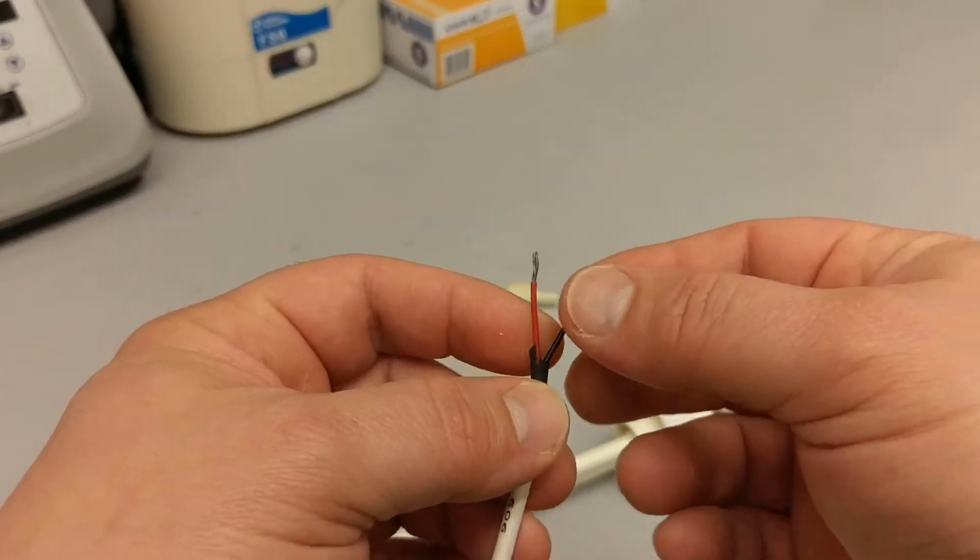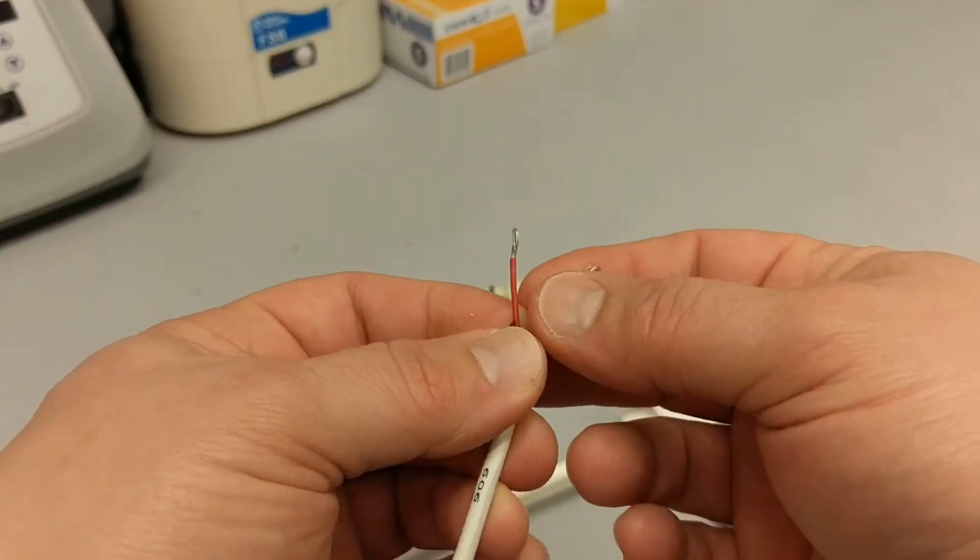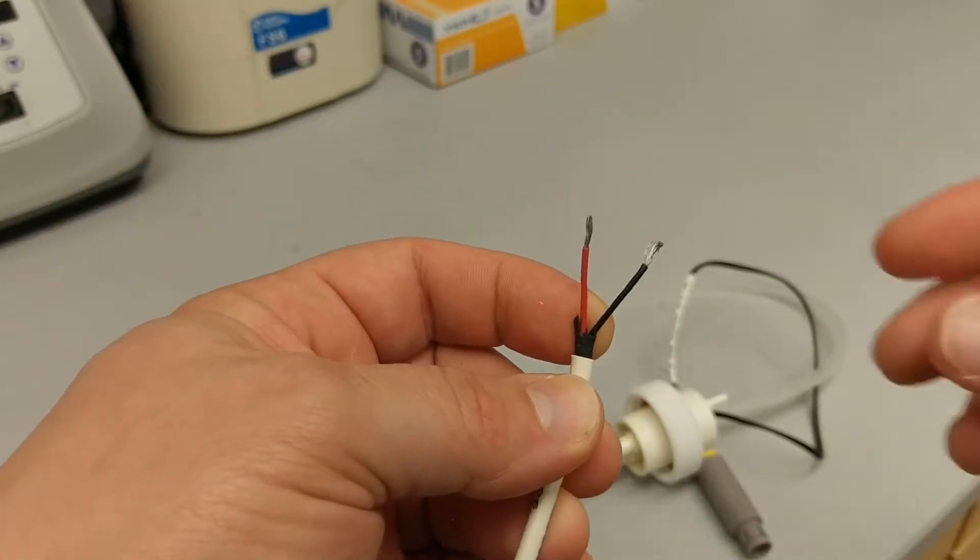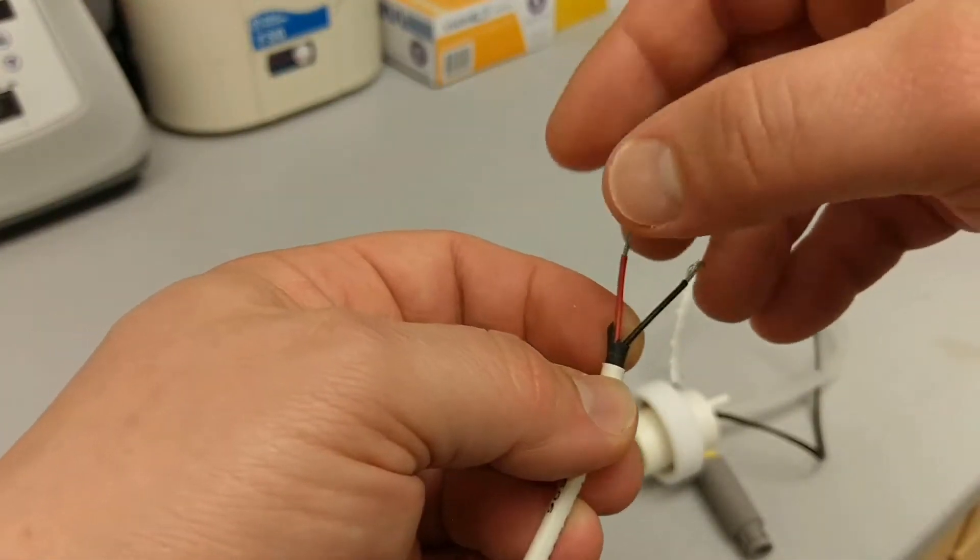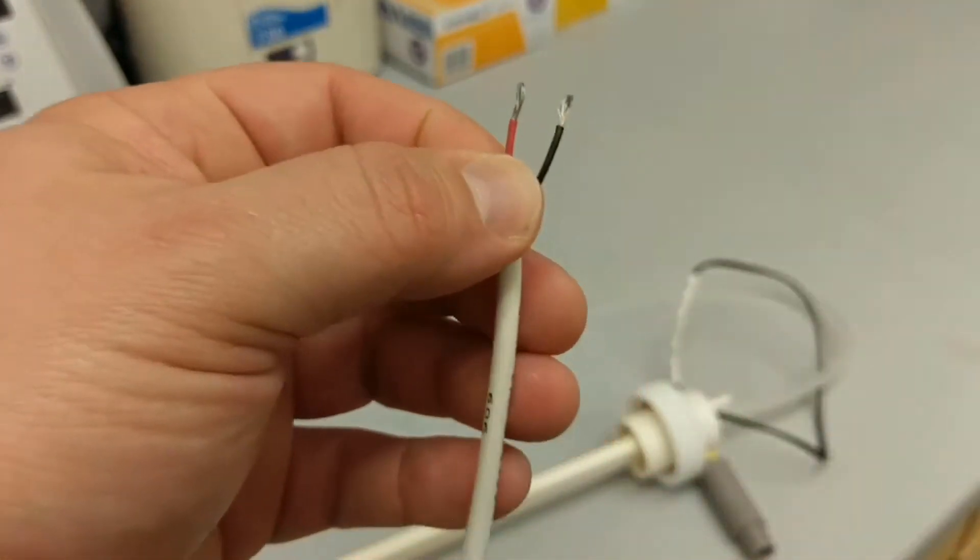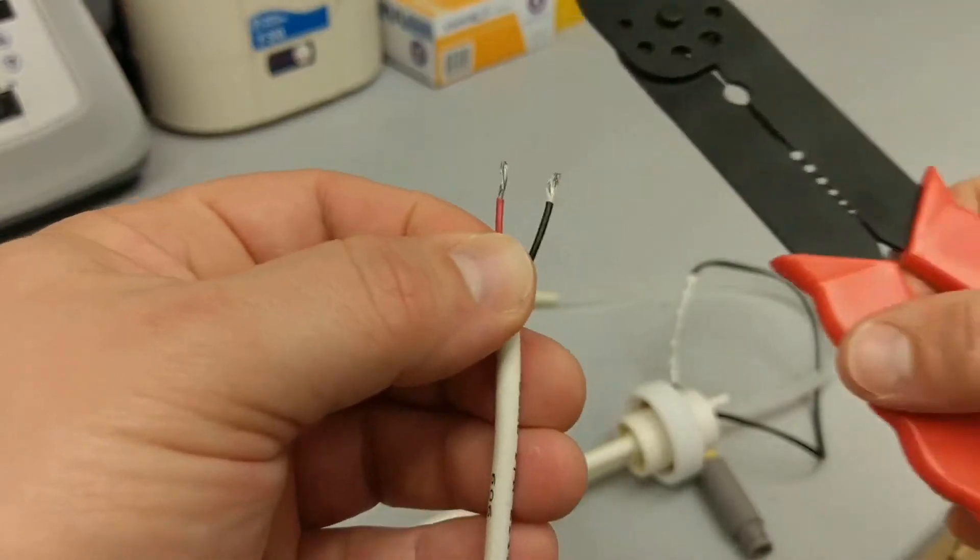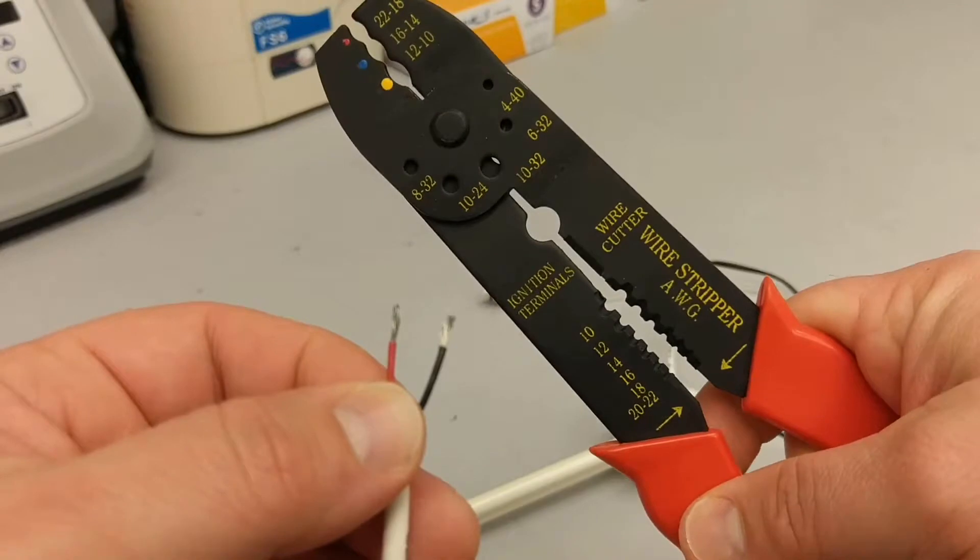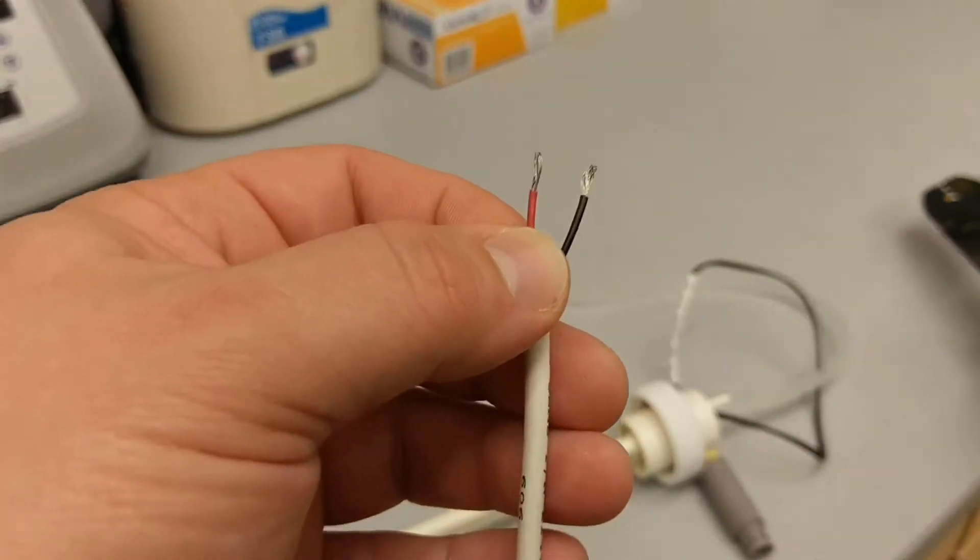And if you cut this off, you'll see that there are two wires inside here, a black and a red wire. And so what I've done to modify these is just strip the wire with, you can just use wire strippers like these, or you can even just use a razor blade if you don't have wire strippers.